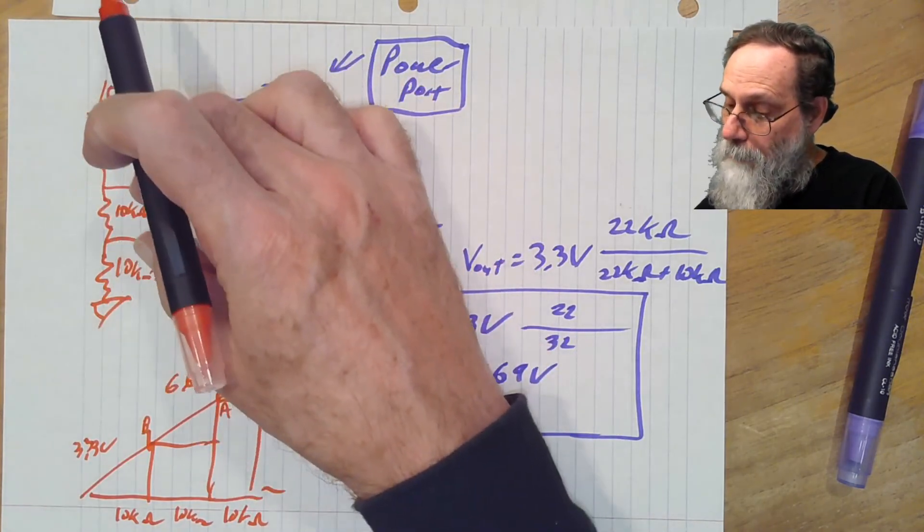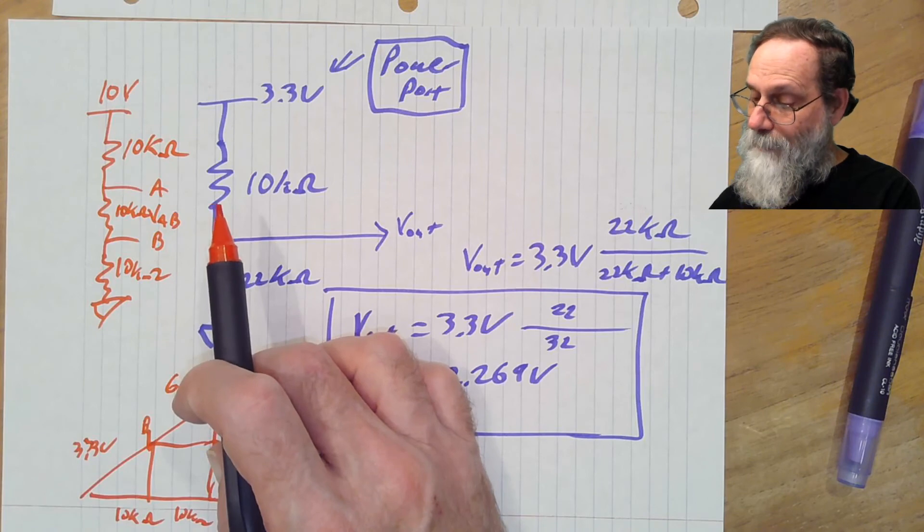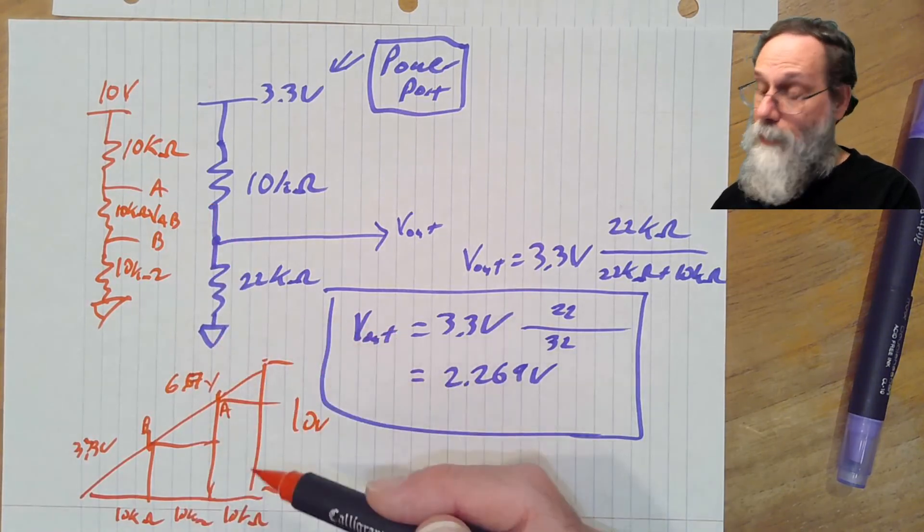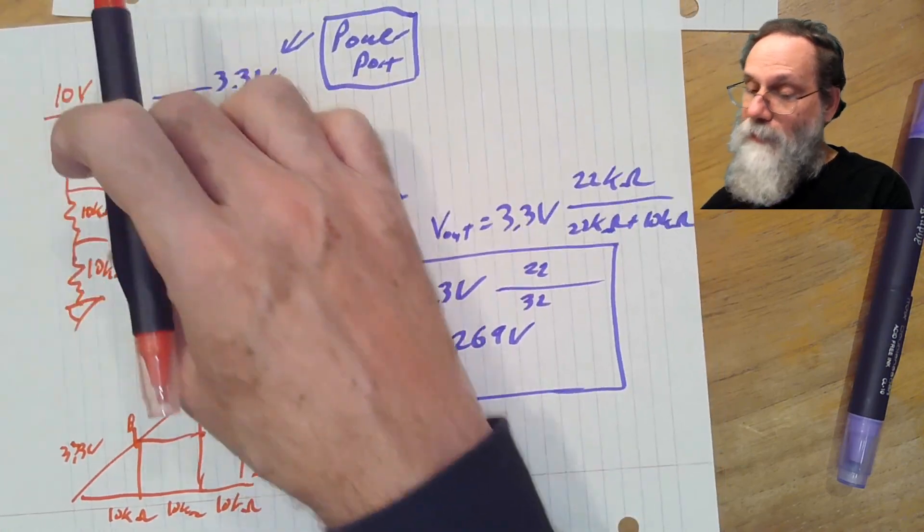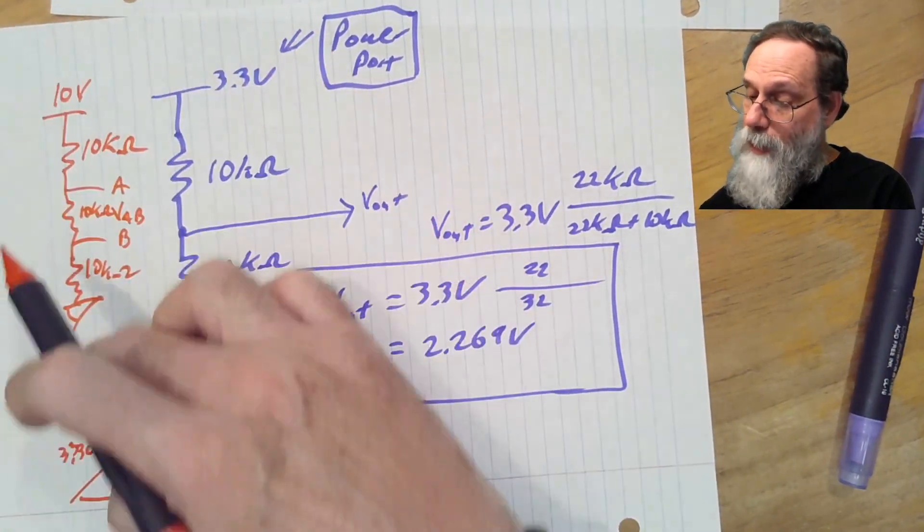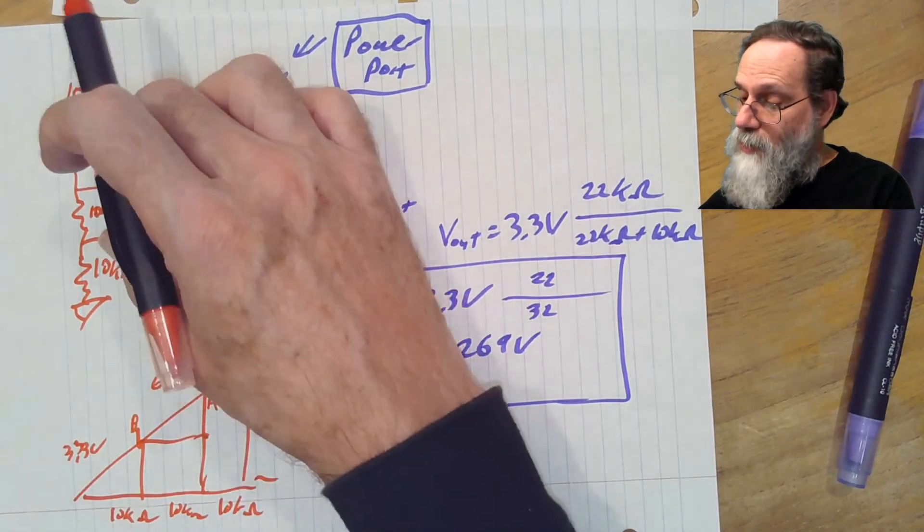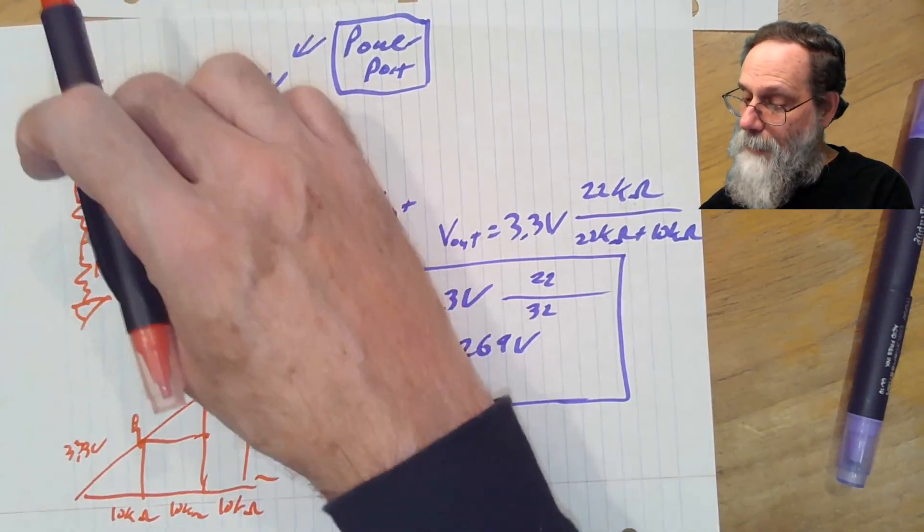The voltage across AB is just the difference here, which is again 3.33 volts from here to here. Any chunk I've got here, because the whole thing is scaled by whatever the current is,